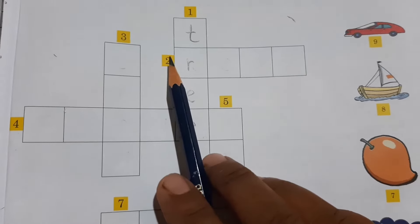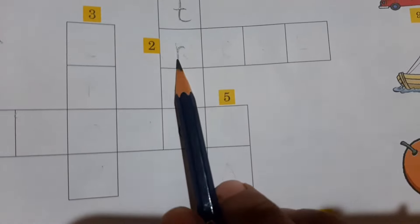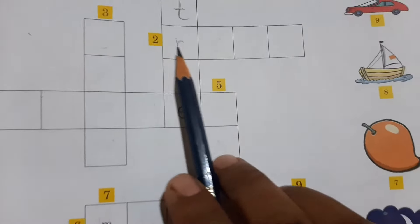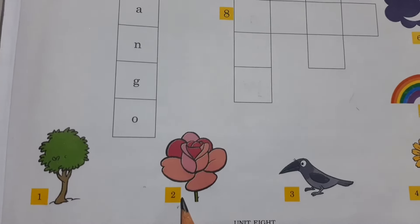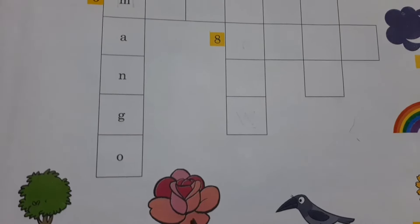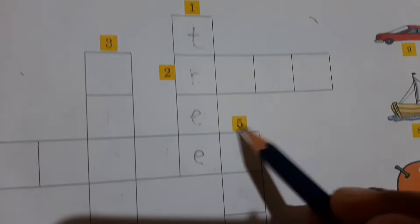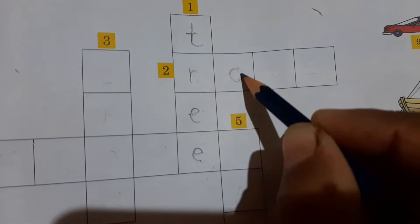Now second box. In front of the second box, you can see here R is already written. What picture we can see on number 2? Number 2 is rose. So what is the spelling of rose? R-O-S-E. Here we write R-O-S-E.